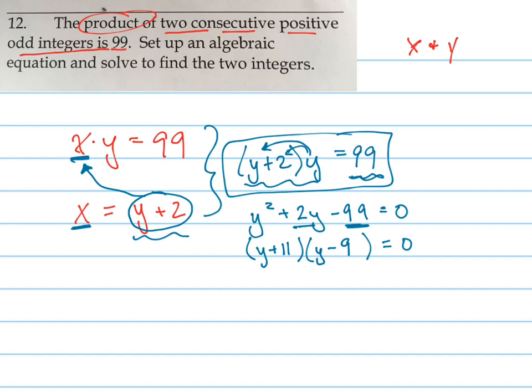Now that I have something times something else equals 0, I can use the zero product property, which says now you can say that either y plus 11 equals 0 or y minus 9 equals 0. In this case, y equals negative 11. In this case, y equals positive 9.